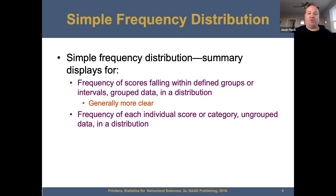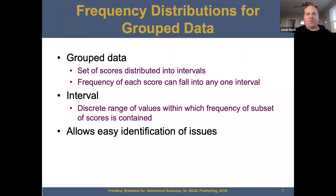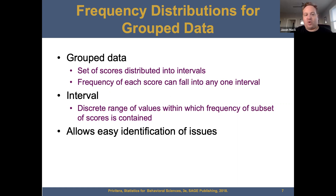Simple frequency distribution is a summary. It displays frequency of scores falling within defined groups or intervals — that's grouped data and distribution — and generally it's more clear. The frequency of each individual score or category is ungrouped data in a distribution. Grouped data is the set of scores distributed in intervals; the frequency of each score can fall into any one interval. An interval is a discrete range of values within which the frequency of a subset of scores is contained.